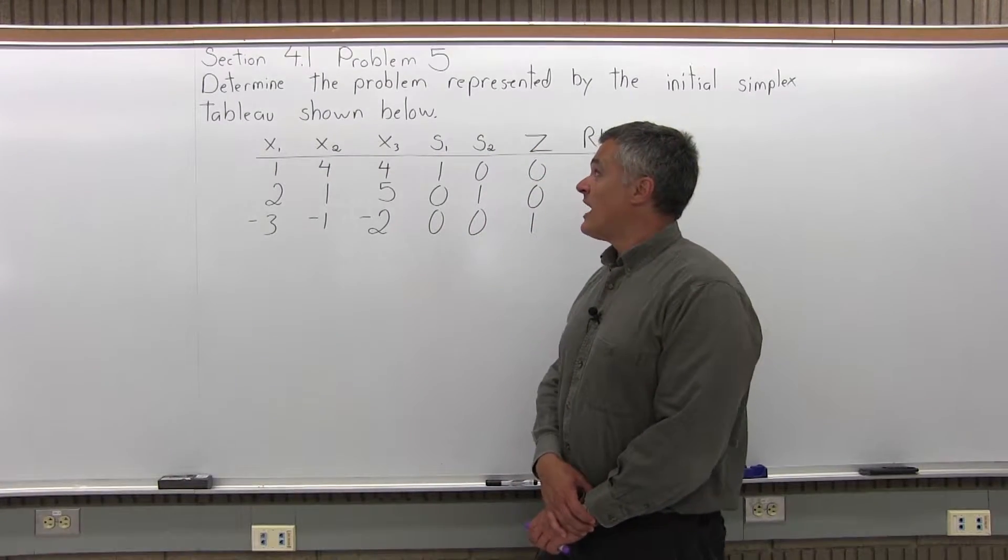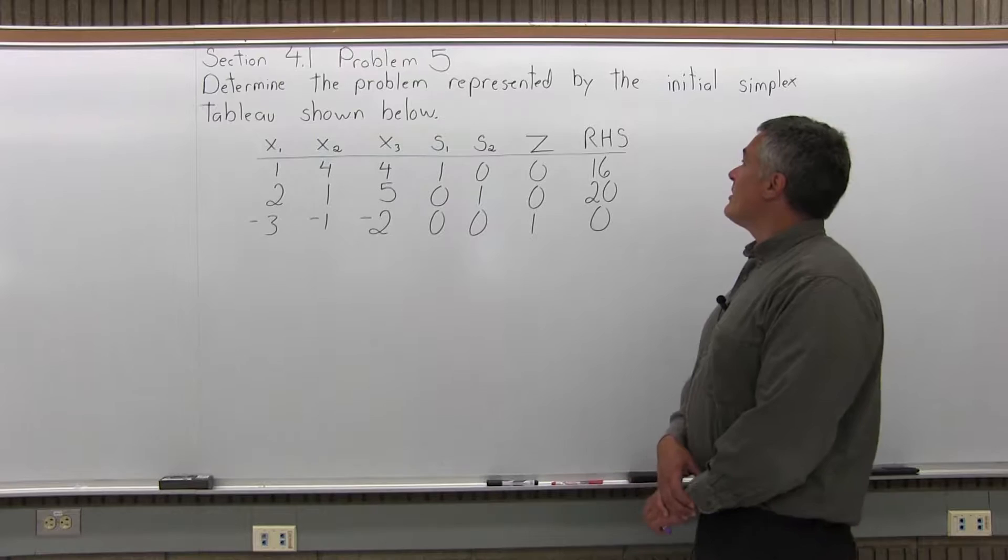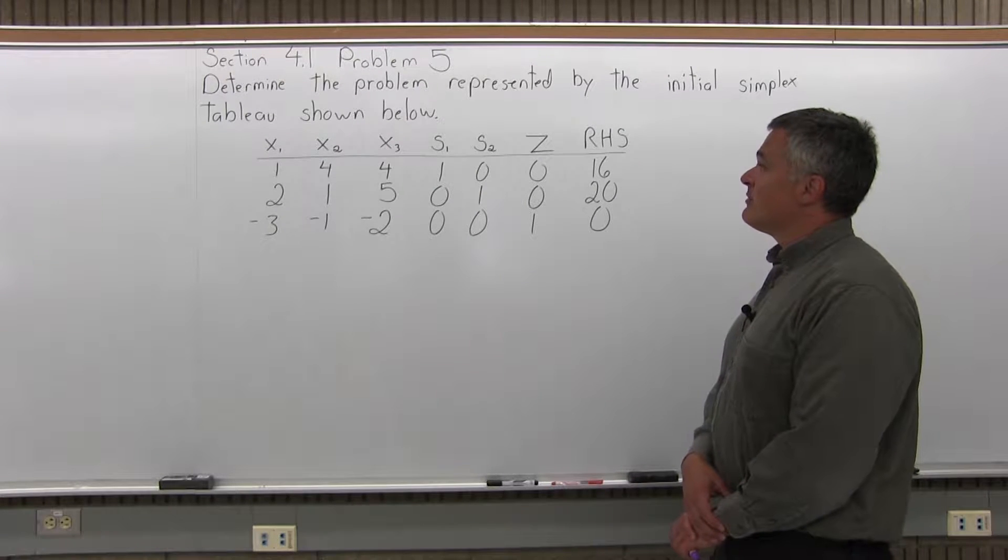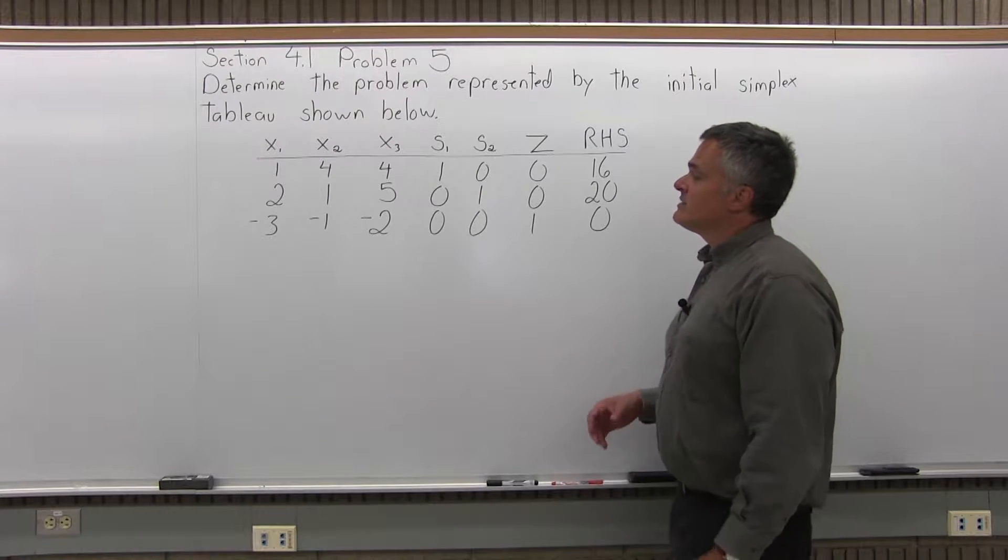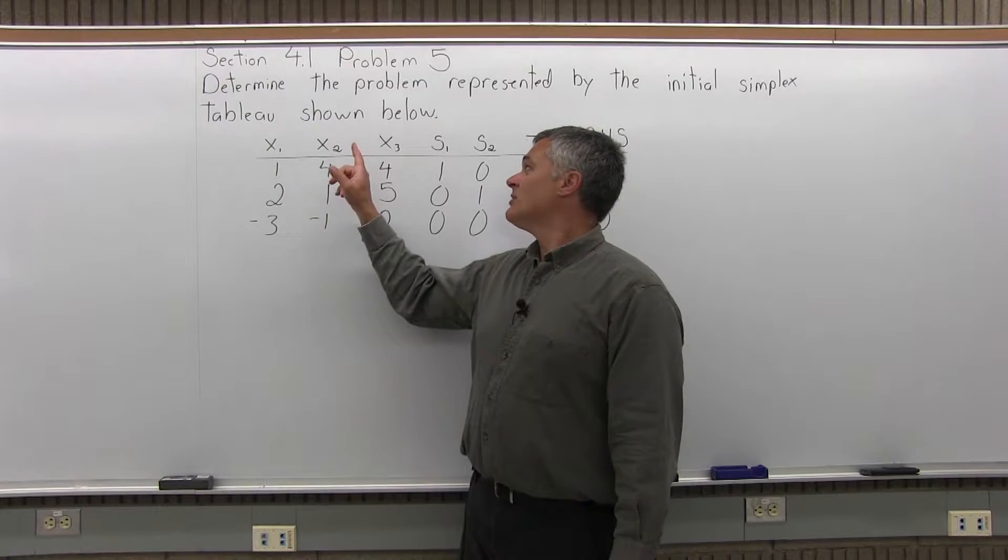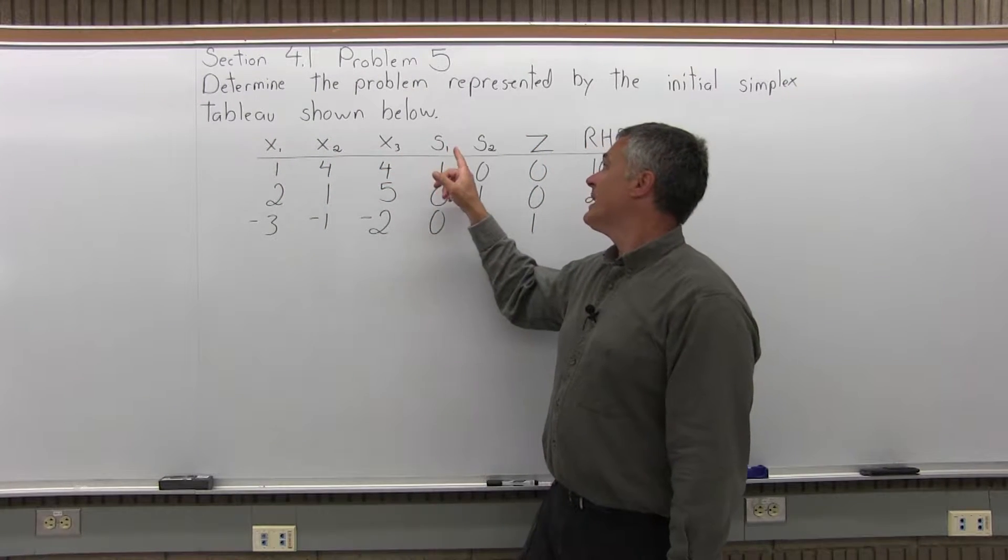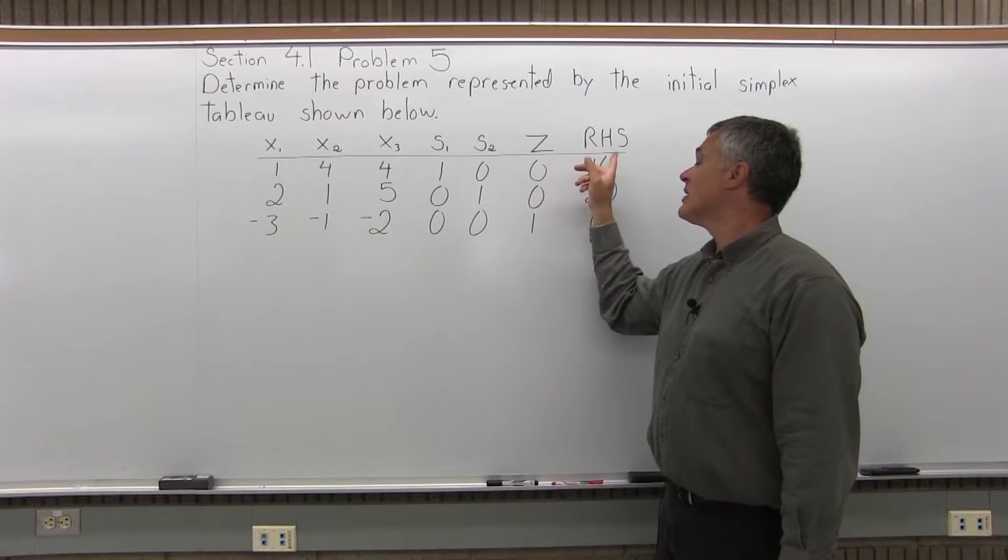This is Section 4.1, Problem 5. It says, determine the problem represented by the initial simplex tableau shown below. We have a simplex tableau with the following columns: an X1 column, X2 column, X3 column, S1, S2, Z, and right-hand side.